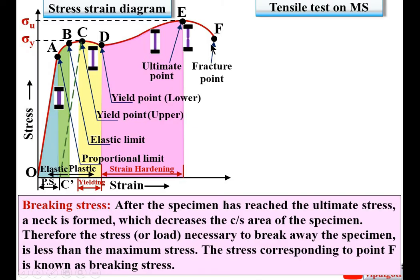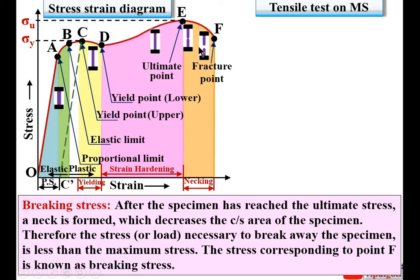Breaking stress is always less than ultimate stress in the case of a tensile test on mild steel. This portion E to F is known as necking, because after point E a neck is formed, and exactly at point F the specimen breaks. The stress corresponding to point F is known as the breaking stress.